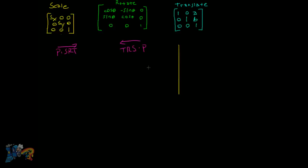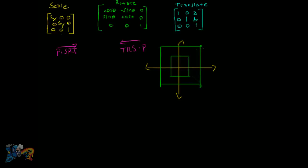Let's use a simple example. Say we have our axes and a square at the center. If we scale it first, it scales from its center because it's at the origin. If we then rotate it, we're rotating it about the center as well. You'd end up with something that's twice as big — say this much bigger — and then rotated about its center. That's all fine.